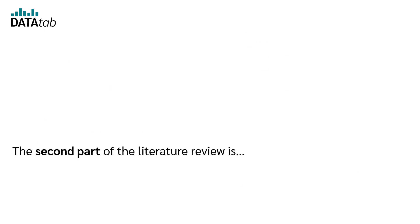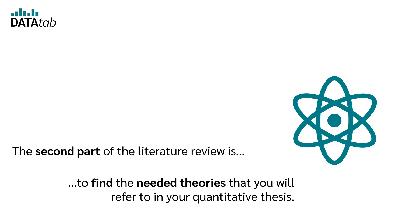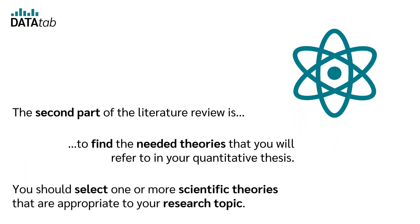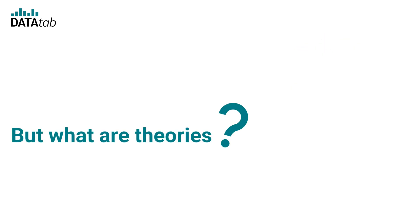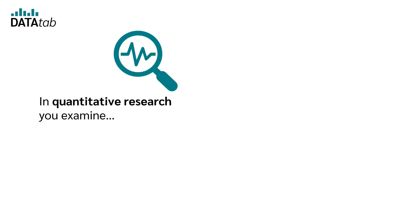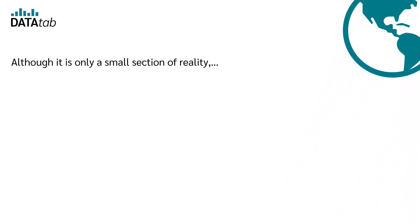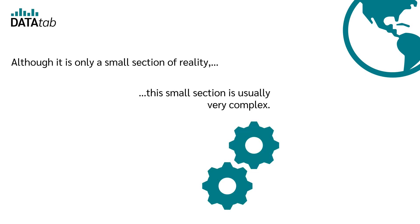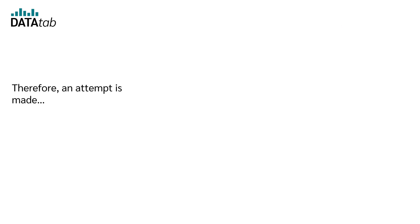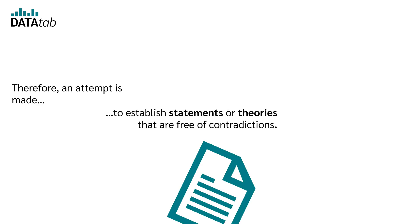The second part of the literature review is to find the theories you will refer to in your quantitative thesis. You should select one or more scientific theories appropriate to your research topic. But what are theories? In quantitative research, you examine a small section of reality. Although it is only a small section, this section is usually very complex. Therefore, an attempt is made to establish statements or theories that are free of contradictions.